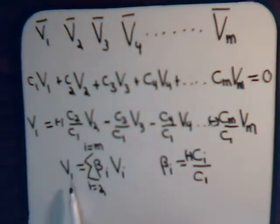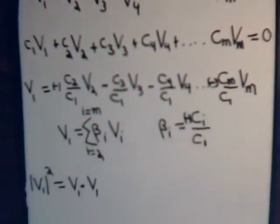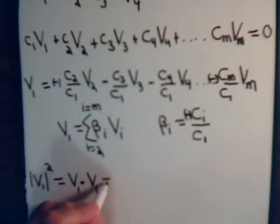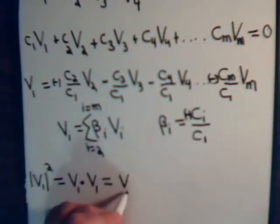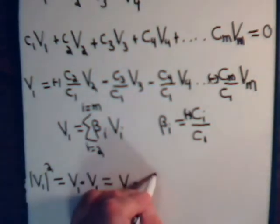Now, the length of v1, that's just its inner product or its dot product. Its length squared is v1 dot v1.